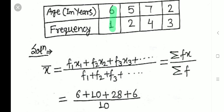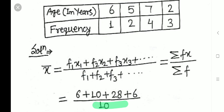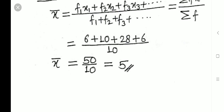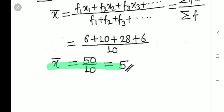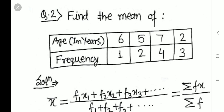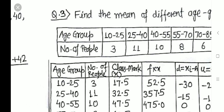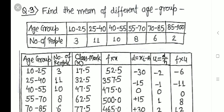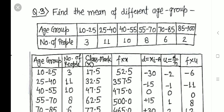So: 6 + 10 + 28 + 6 = 50. Sum of all frequencies: 1+2+4+3 = 10. Mean = 50 ÷ 10 = 5. The formula is: x̄ = Σ(f × x) / Σf, where f is frequency and x is value. This is the way to calculate mean from a frequency distribution table.